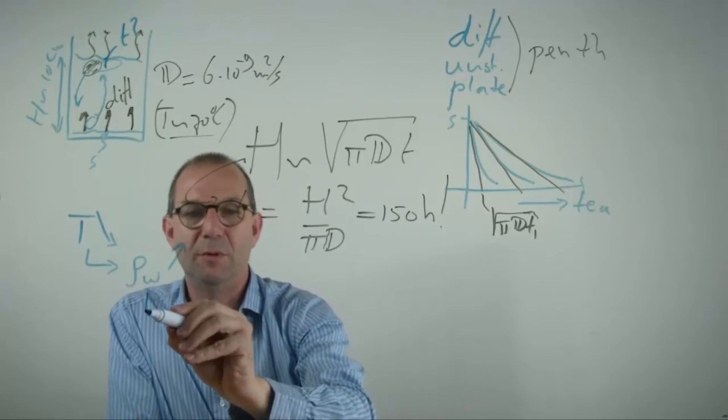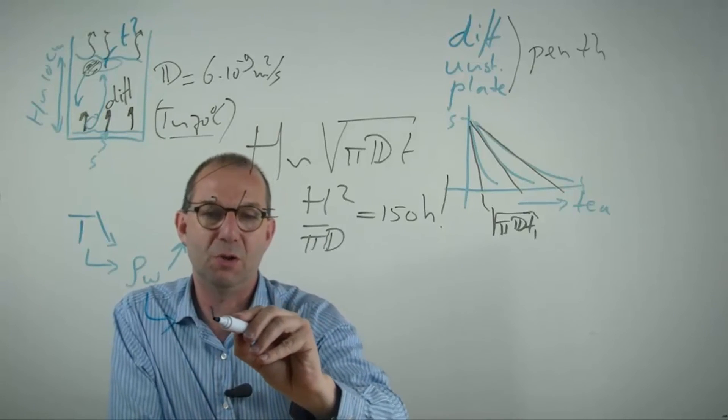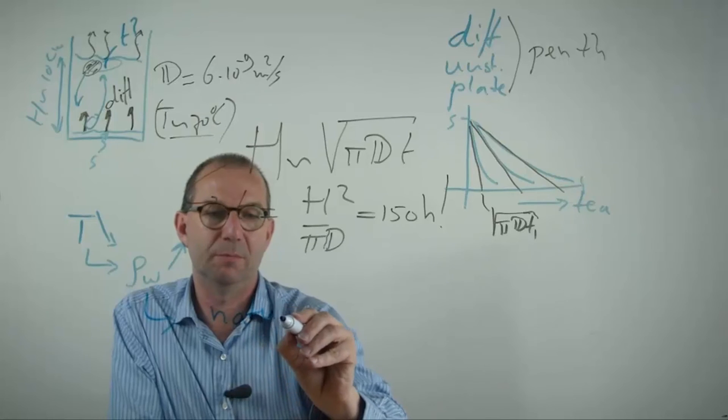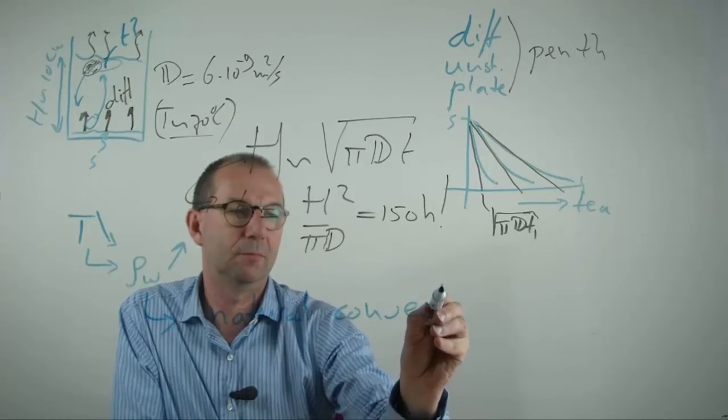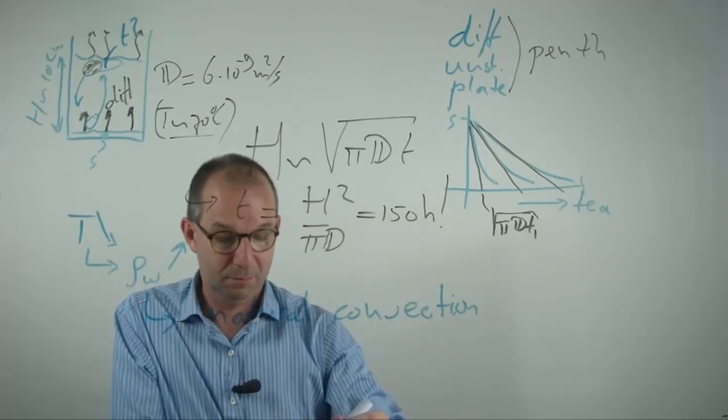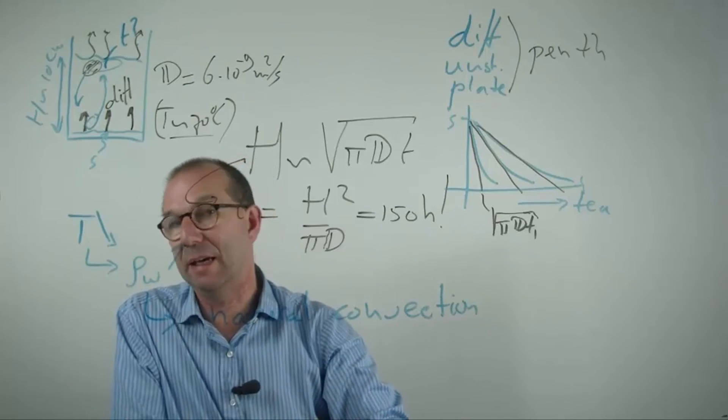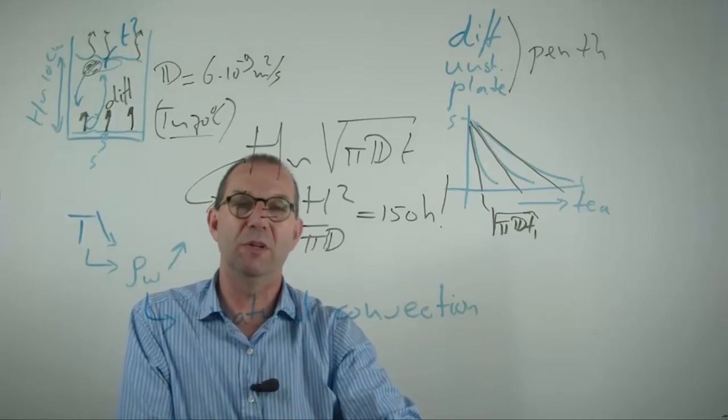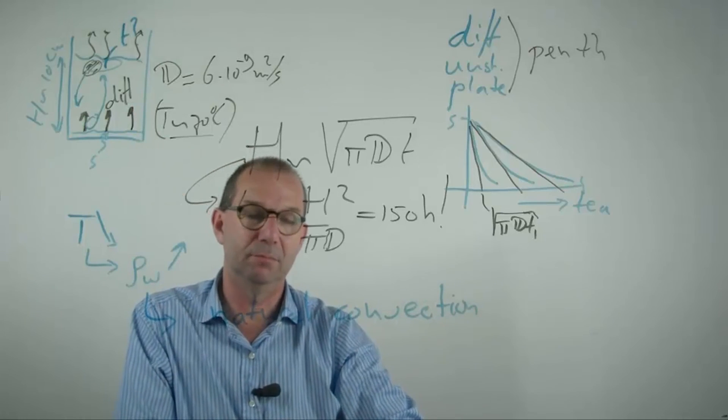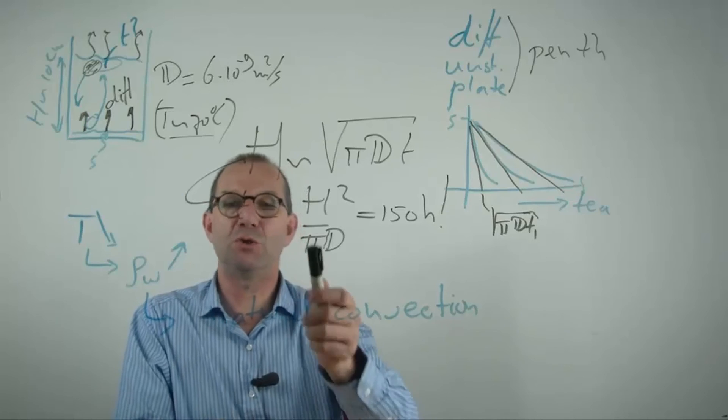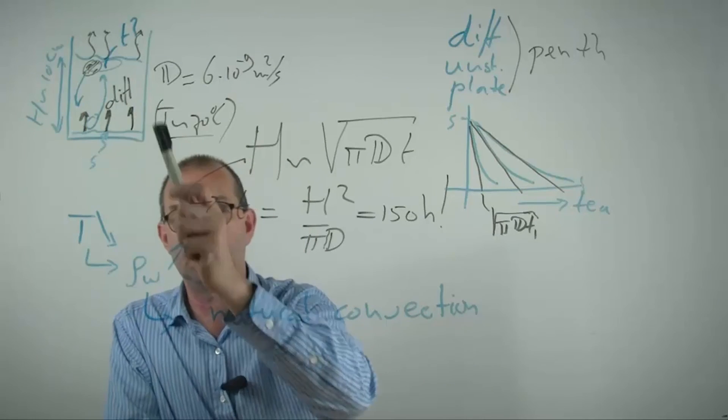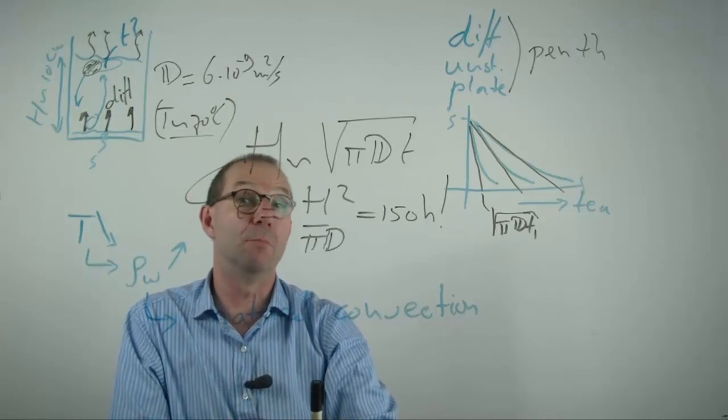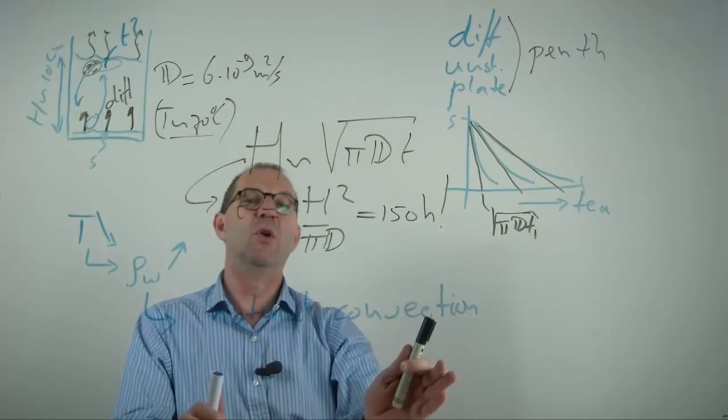So you see that gravity will induce flow which is called natural convection. And that automatically kicks in. You don't have to stir. This will always be the case in your cup of tea. And this stirring by gravity obviously makes that the time required for sugar to come here at the top is much much lower. That's beyond what we'll do.